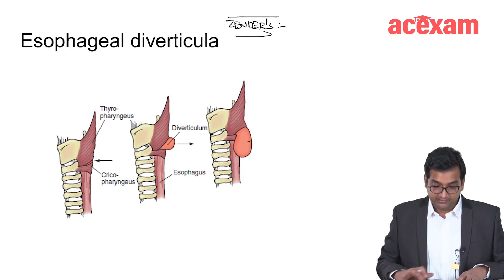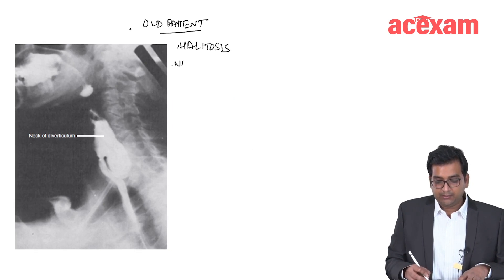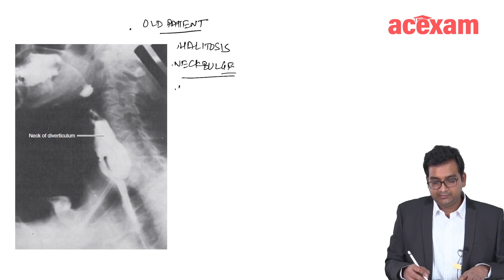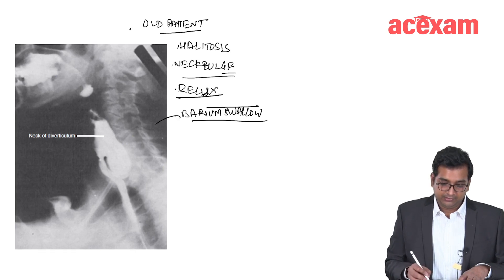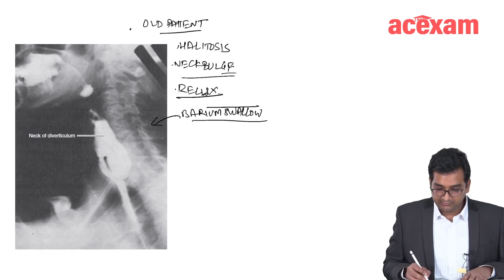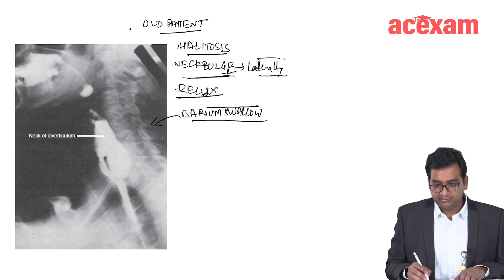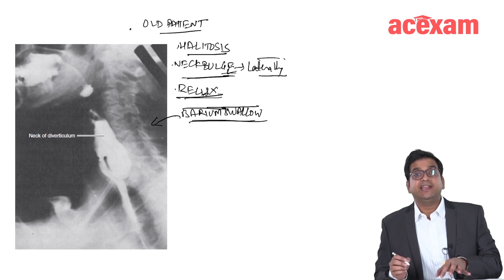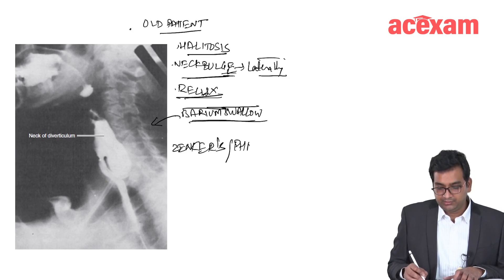Generally, you will see a question like this: there is an old patient having halitosis, neck bulge, reflux, and barium swallow finding will be given. Sometimes to confuse you, they may say the neck bulge is seen laterally, on the left side, or the right side. But if there is halitosis, neck bulge, reflux, and some outpouching present in the neck, you should go for Zenker's diverticulum, which is also known as pharyngeal pouch.